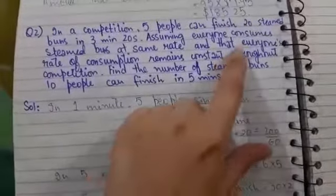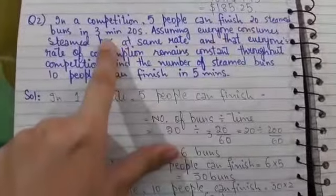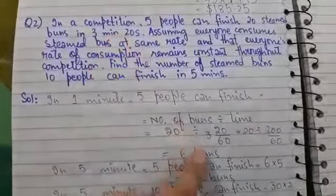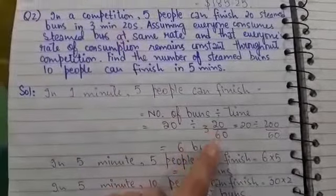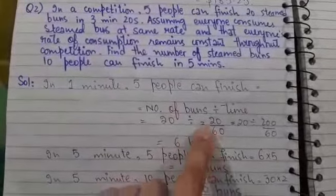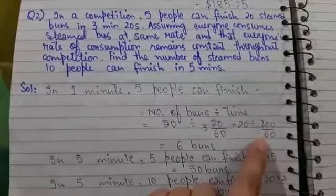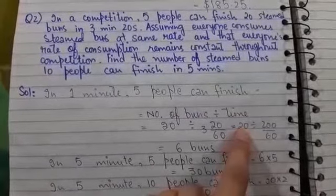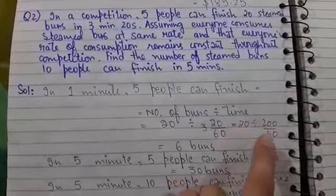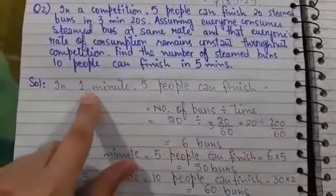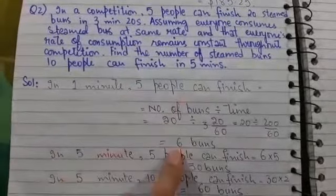The number of buns is 20 and the time is 3 minutes 20 seconds. We can write 3 minutes 20 seconds as 320 by 60. Its answer will be 200 divided by 60. So basically we are dividing 20 by 200 by 60. The answer will be 6 buns. This means that in 1 minute, 5 people can finish 6 buns.